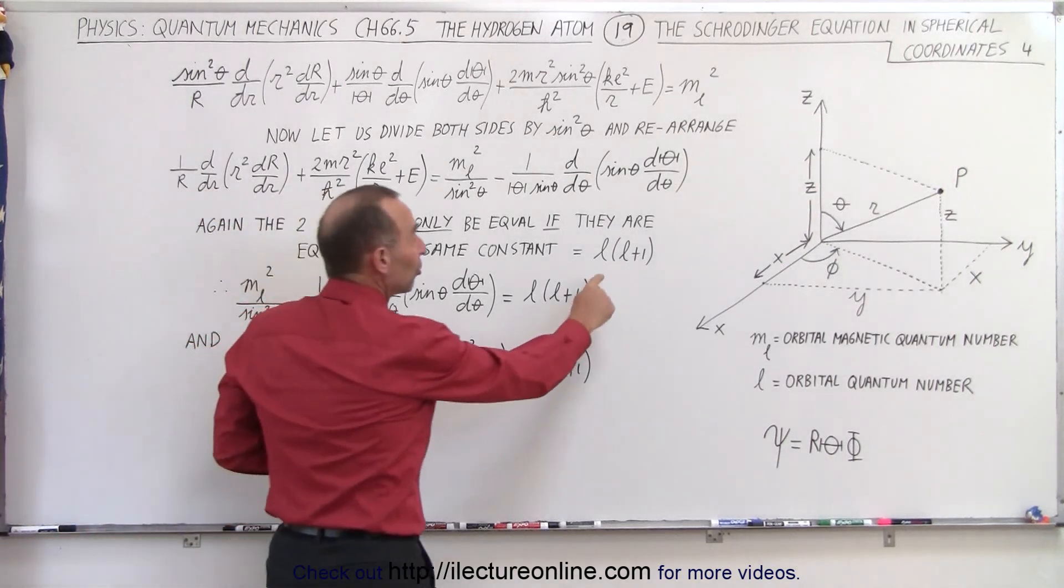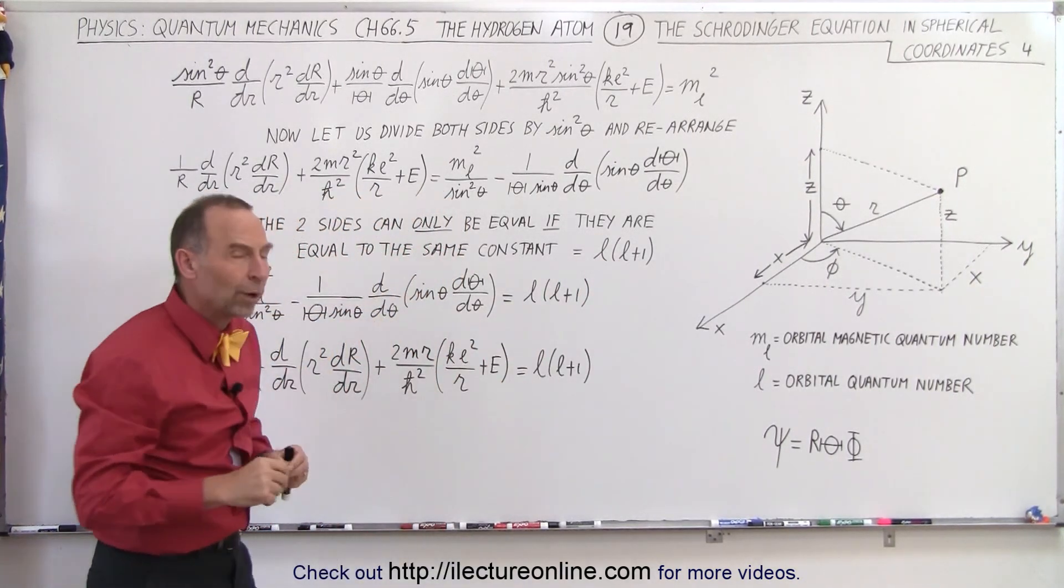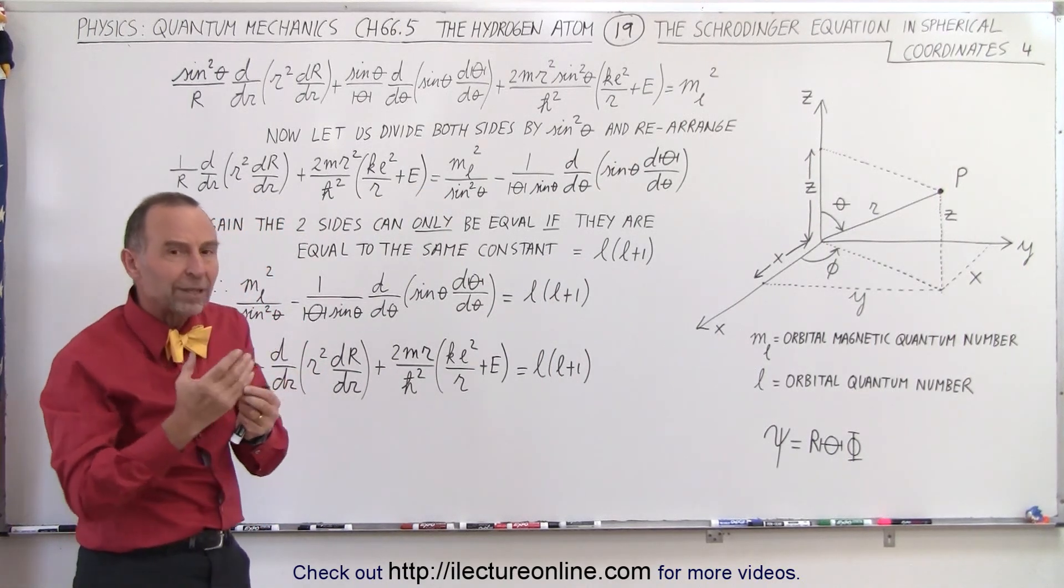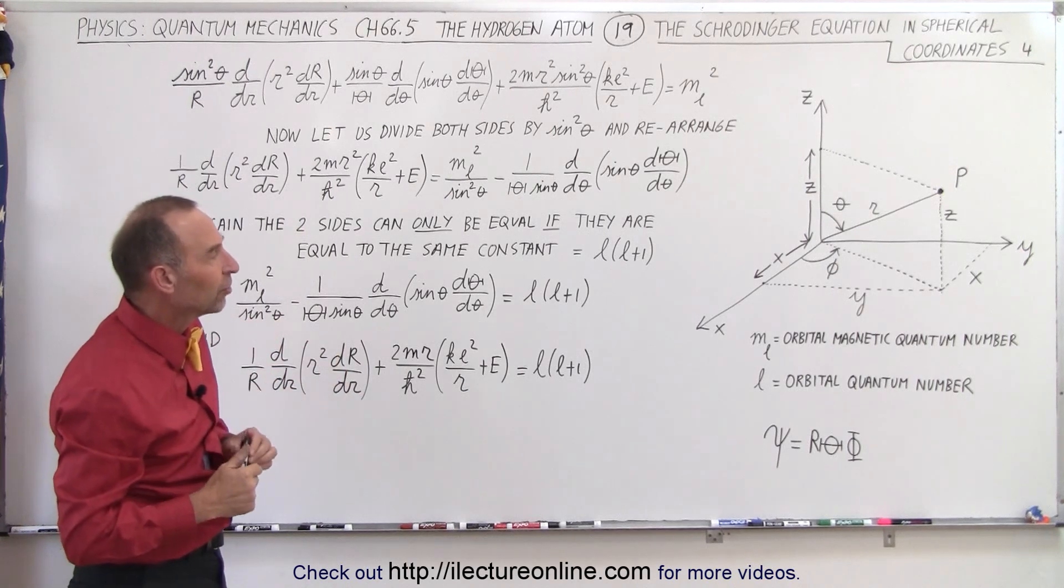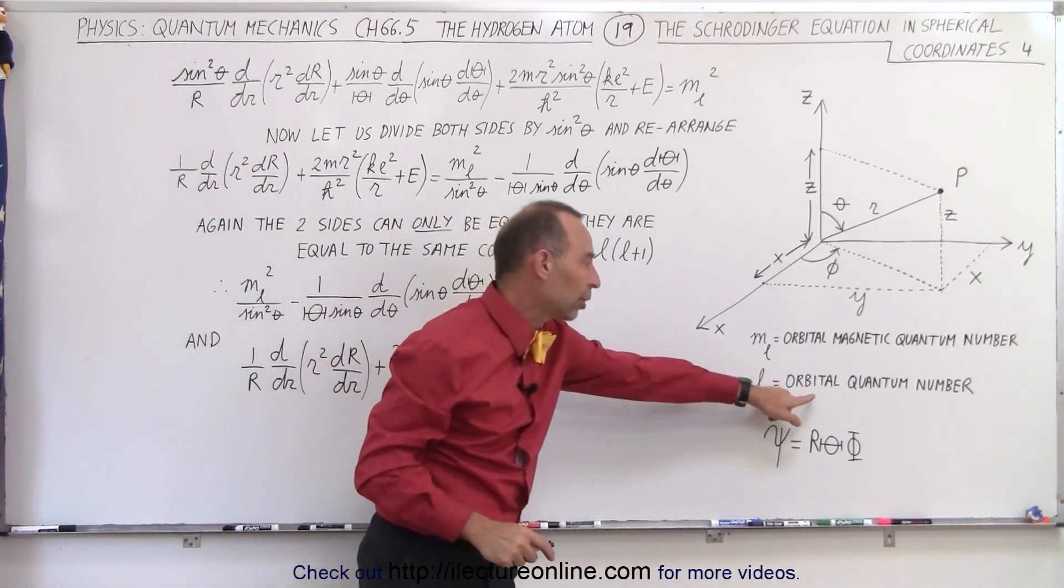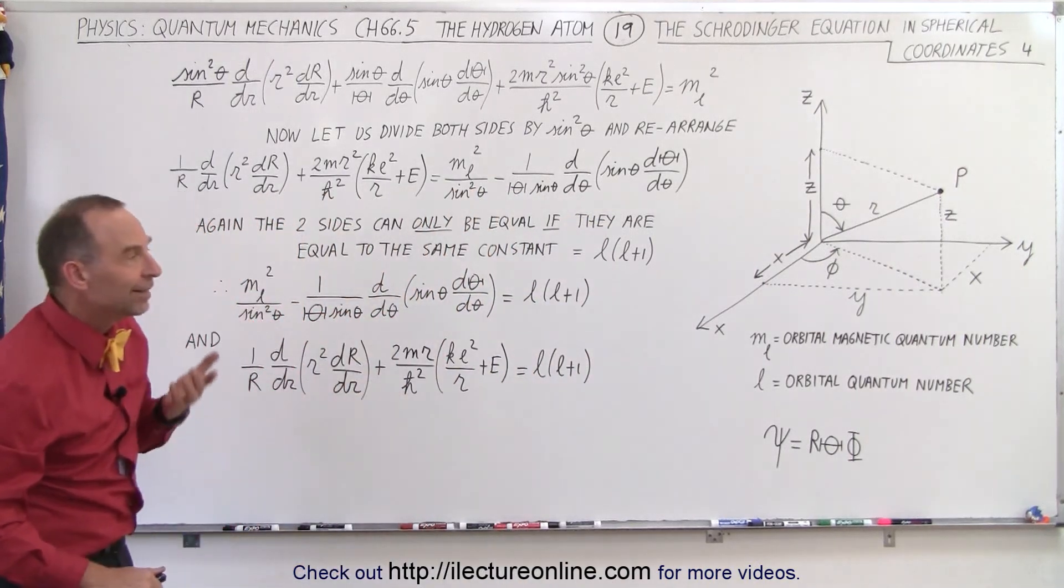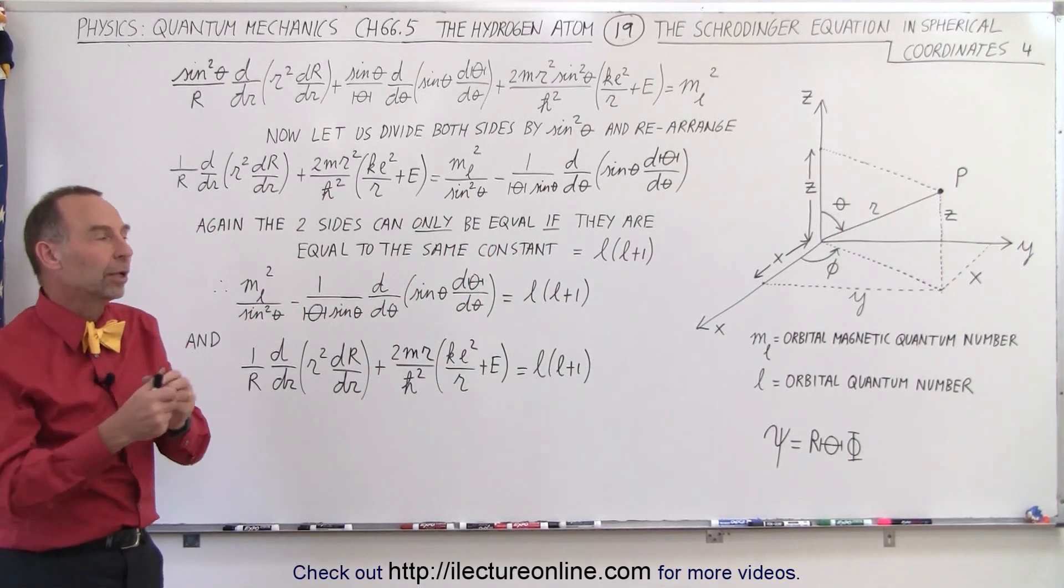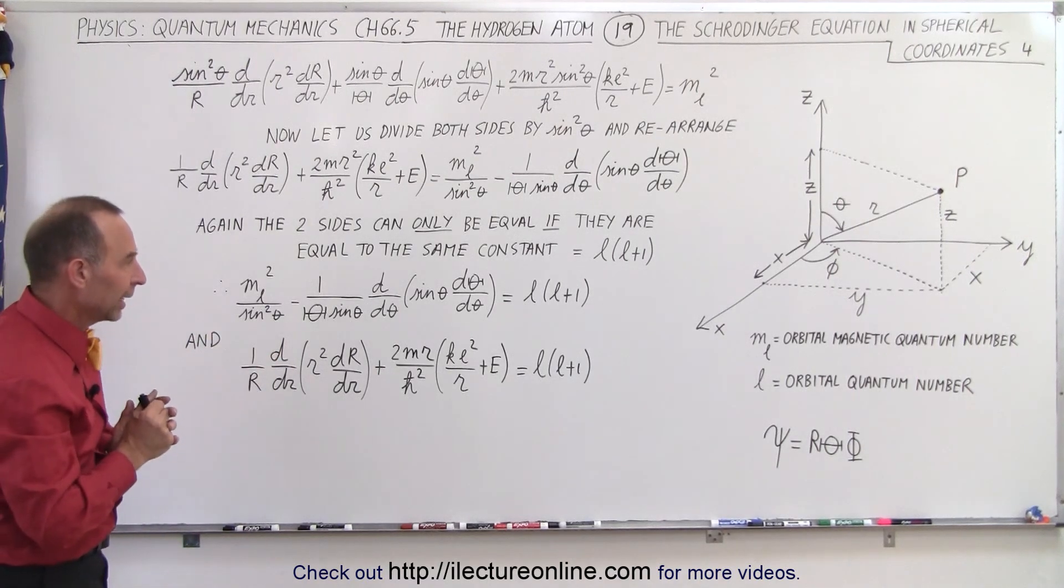If you don't know what the constant is, just call it c, but with some foresight and understanding what we're going to end up with, we know that we should set the constant equal to L times the quantity L plus 1, where L is a constant that has something to do with the angular momentum of the electron as it goes around the nucleus, and L is considered what we call the orbital quantum number.